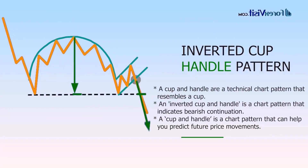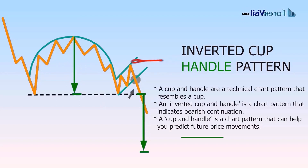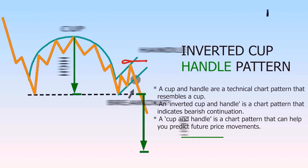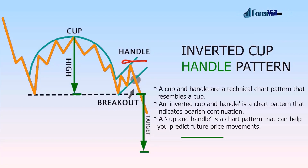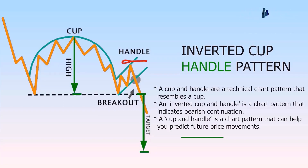The cup and handle pattern occurs in both small time frames like the one-minute chart and in large time frames like daily, weekly, and monthly charts. It occurs when there is a price wave down followed by a stabilizing period, followed by a rally of approximately equal size to the prior decline. It creates a U-shape, or cup, and the price then moves sideways or drifts downward within a channel that forms the handle.